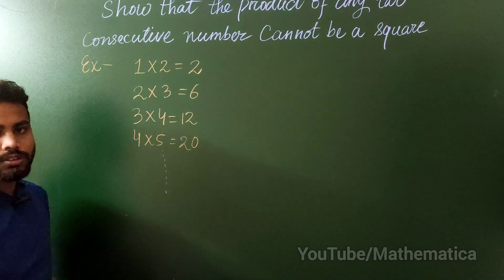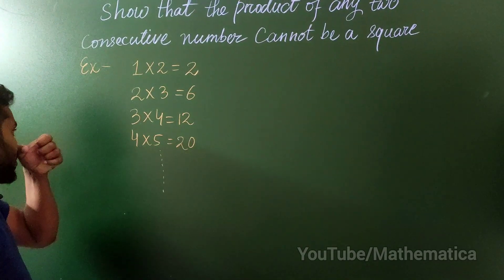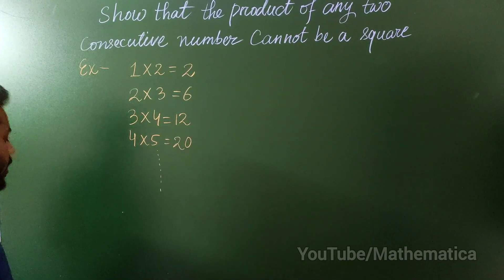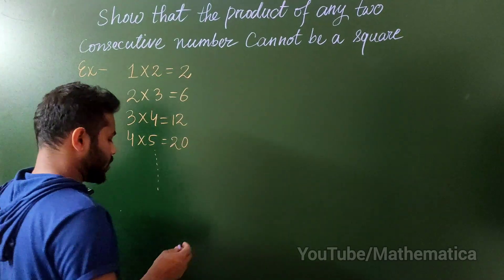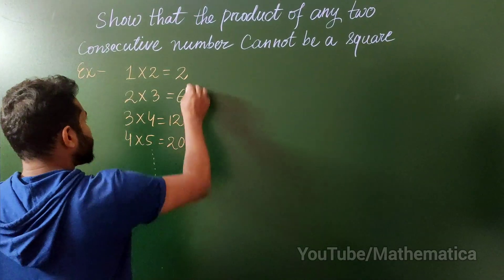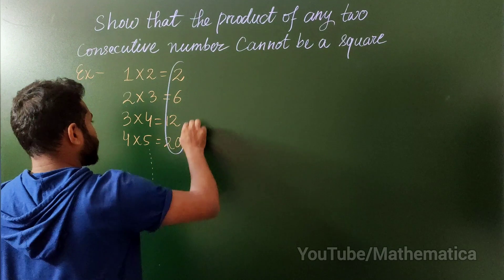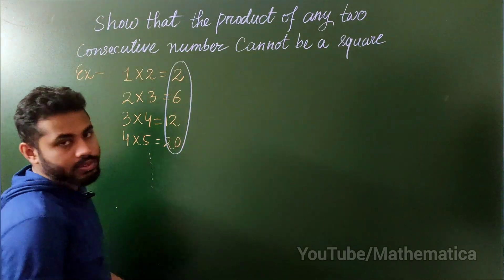There is no such numbers if you multiply together, I mean consecutive numbers if you multiply them together they will produce some square number. So these things are not square. And we have to prove this result.